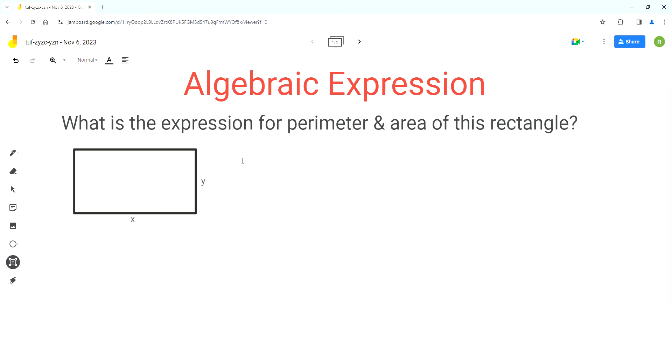Perimeter is the sum of all outer sides of a 2D shape. Now in this rectangle, the outer sides are these four sides here.